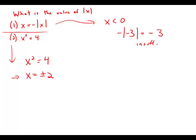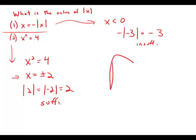What's interesting is that if we take the absolute value of either value, we get two. So we can uniquely determine the absolute value of x. Statement two by itself is sufficient. Since statement one is not sufficient and statement two is sufficient, the answer is choice B.